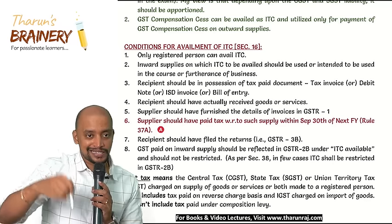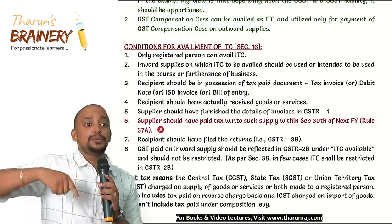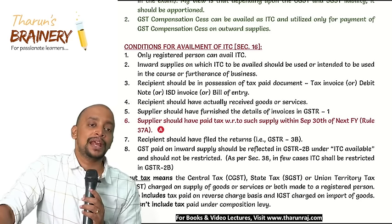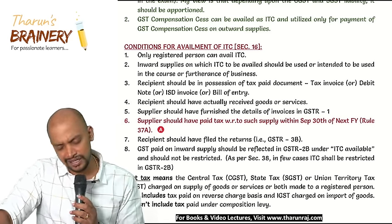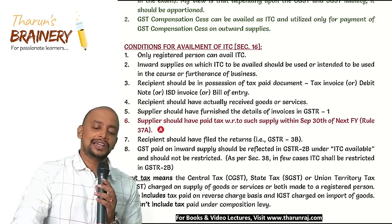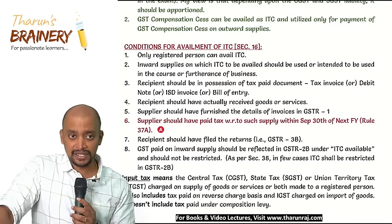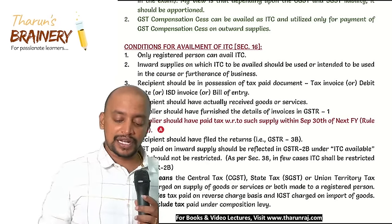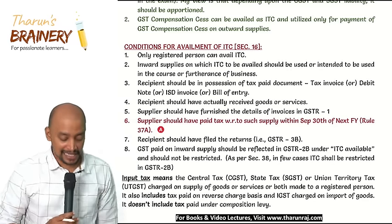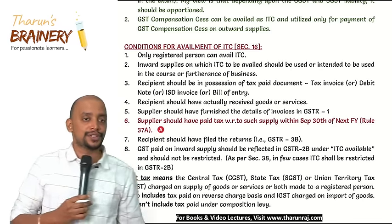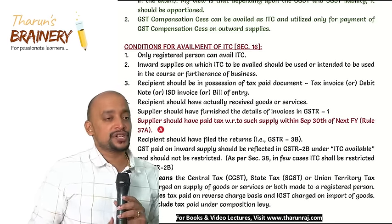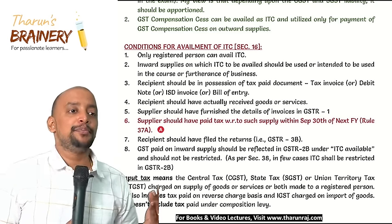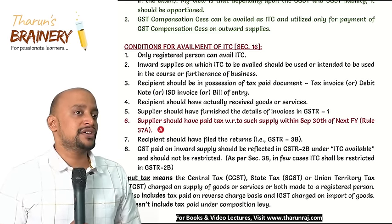Condition 3: The recipient should be in possession of a tax paid document. The four tax paid documents are: tax invoice, debit note (issued by supplier when invoice value increases), ISD invoice (Input Service Distributor invoice), and bill of entry. A bill of entry is filed by the importer at the time of import for clearance of goods from customs authorities, and it contains the IGST component which can be taken as credit.